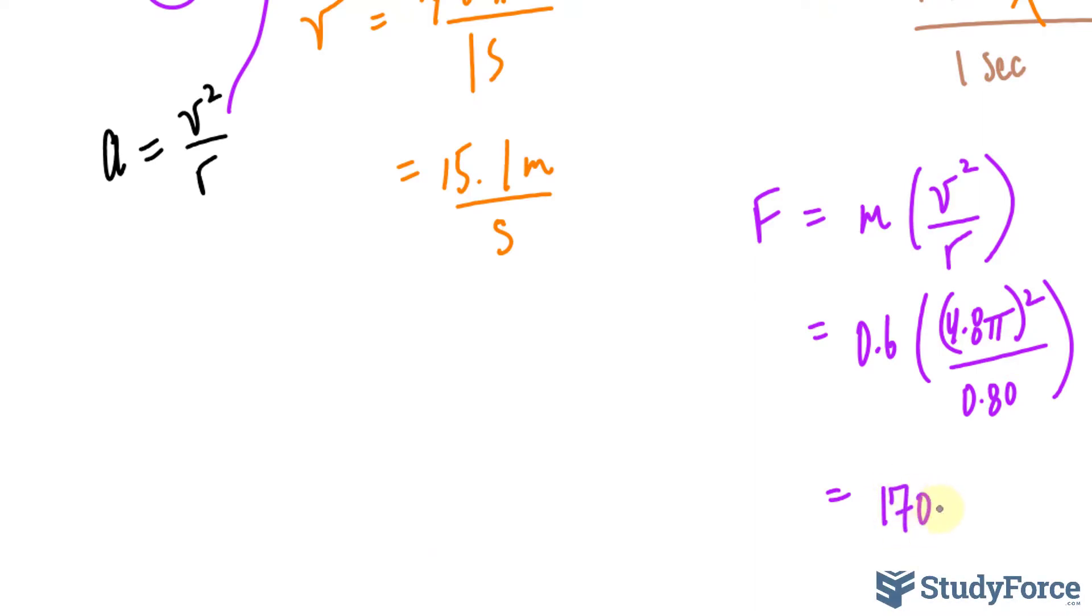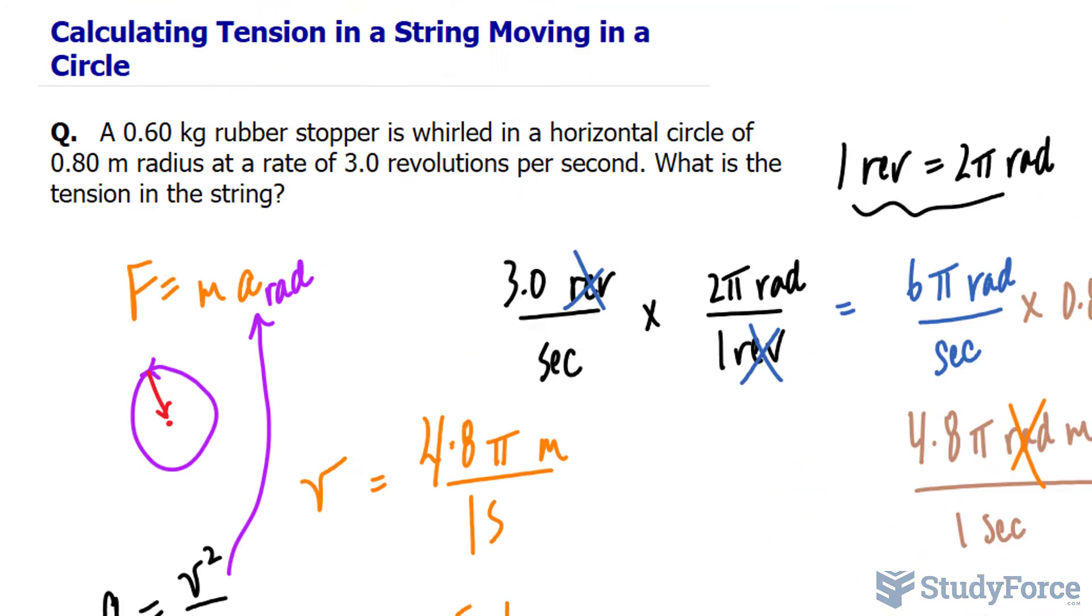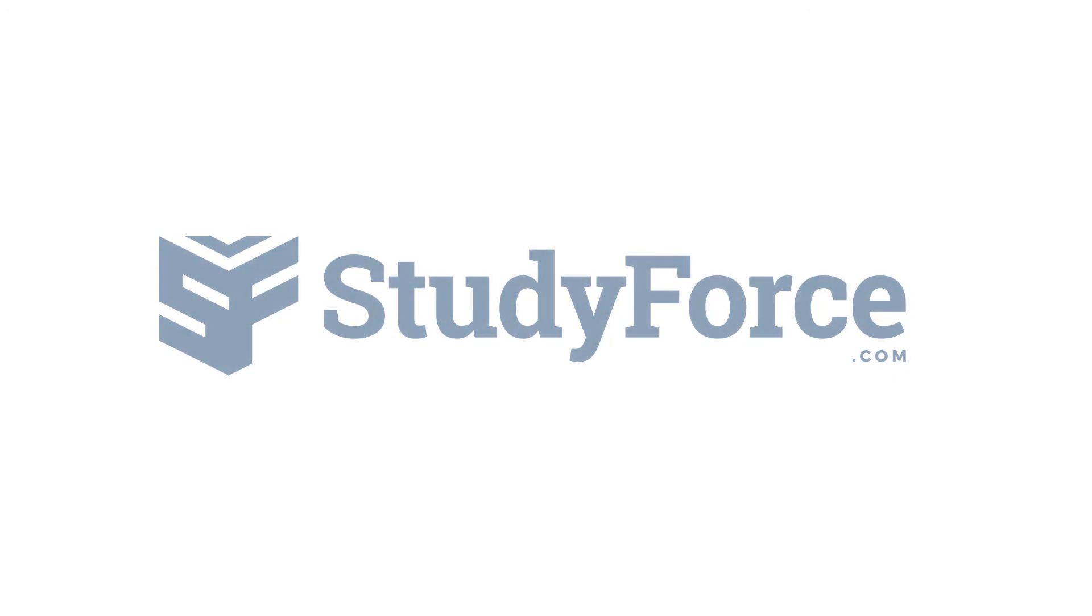So 170.5 newtons of force, or tension, in the string. And there you have it. That's how to calculate tension in a string that's moving in a circle.